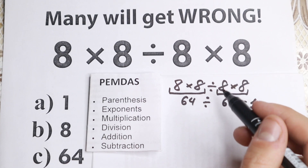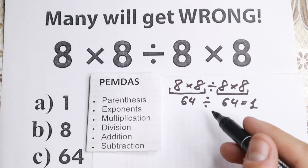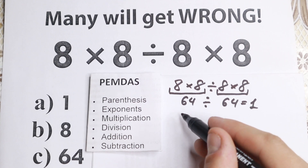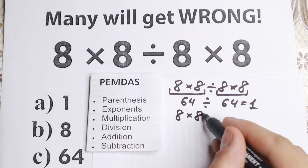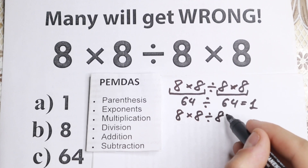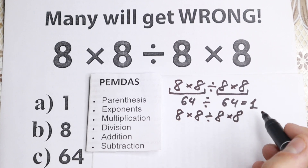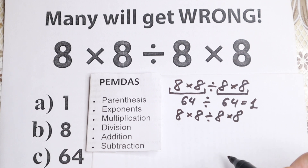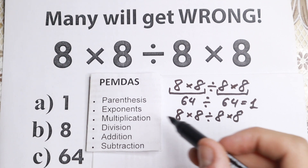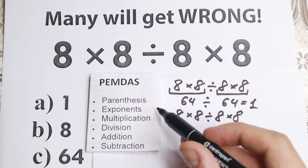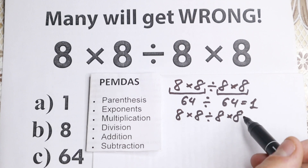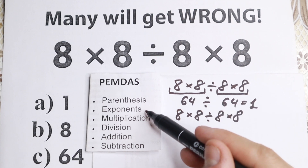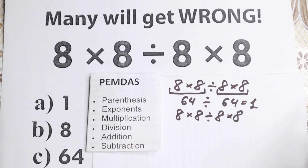So let's look at this order and try to solve it correctly. I'll rewrite the problem once more: 8 times 8 divided by 8 and times 8. What is the correct order? The first step is parentheses — are there any parentheses? No, I don't see any. We also don't have any exponents, no squares or cubes right here, which is great. So we just skip this part.